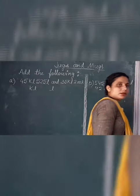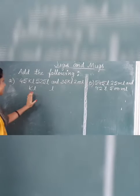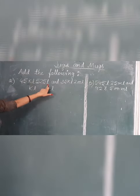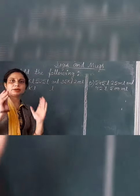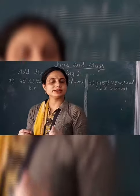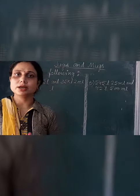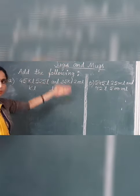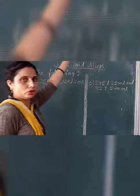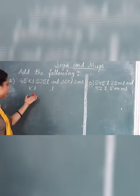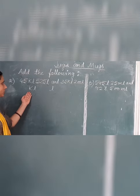When we add these two units, there are two units of capacity. First we mention both units. When I mention two units, we compare which one is the greater unit. Out of kiloliter and liter, the upper unit is greater — kiloliter is greater than liter.